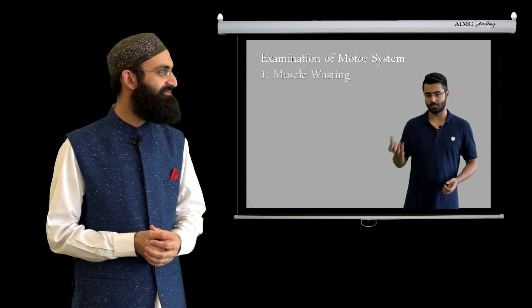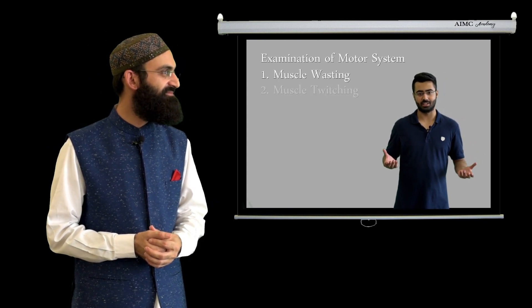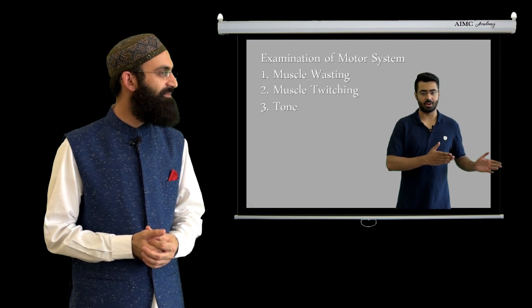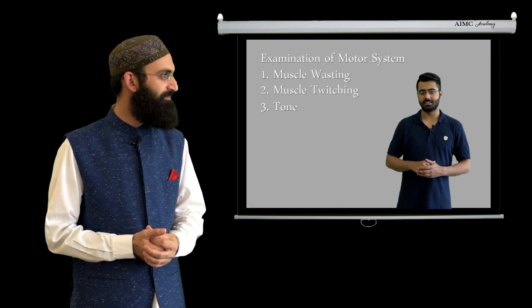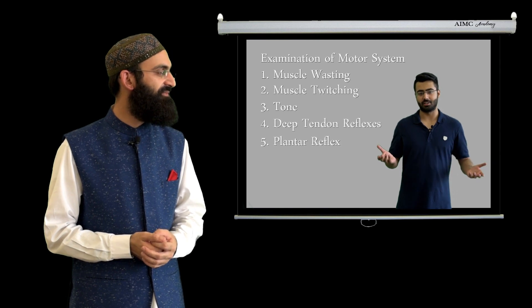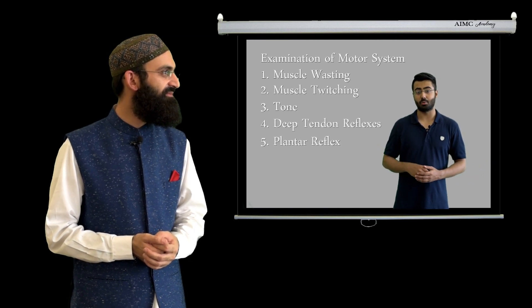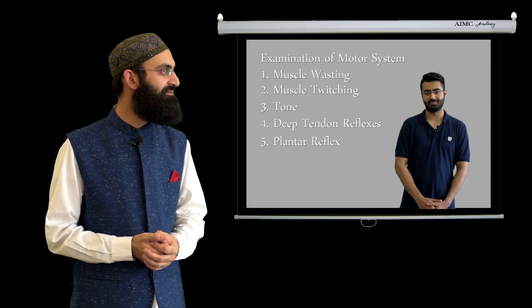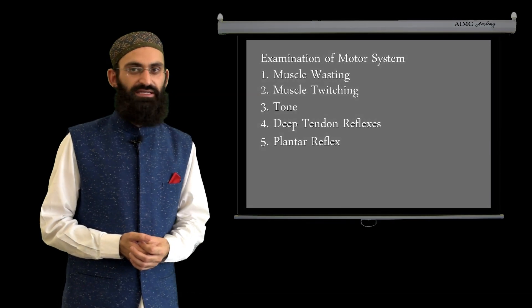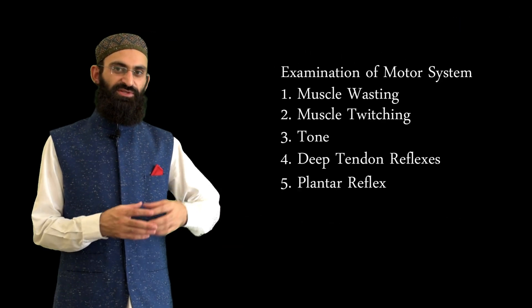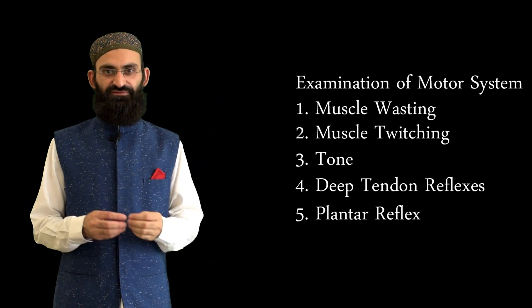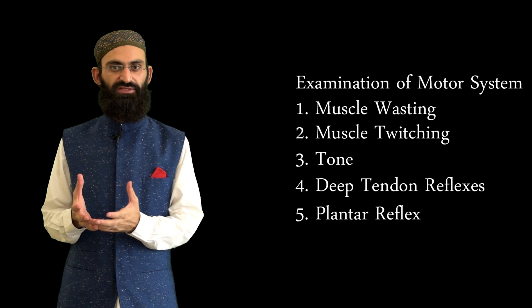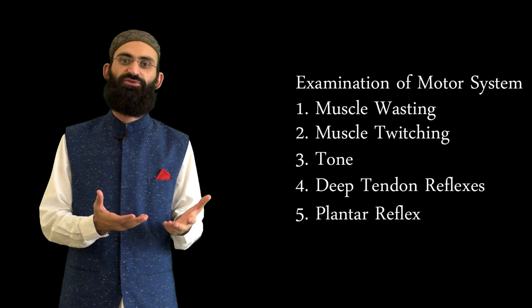We observe muscle bulk and look for signs of muscle wasting and spontaneous muscle twitching. We check the tone and power of various muscle groups. We assess the deep tendon reflexes and the plantar reflex, and finally we look for coordination and gait. Based on these examination findings, we differentiate lower motor neuron from upper motor neuron type weakness.